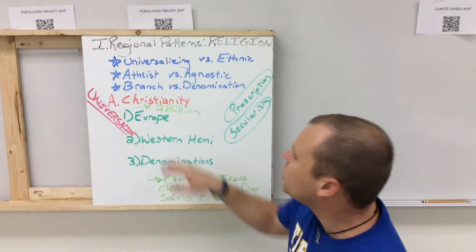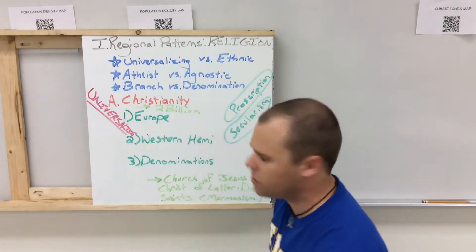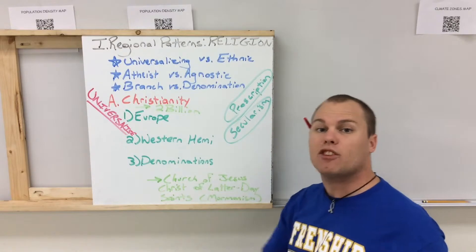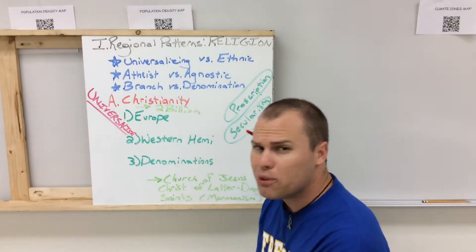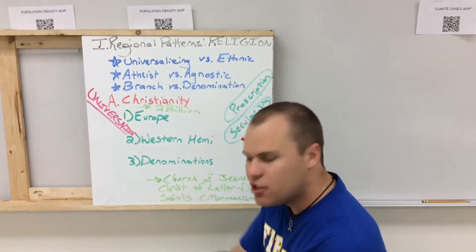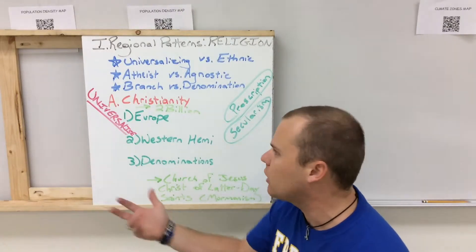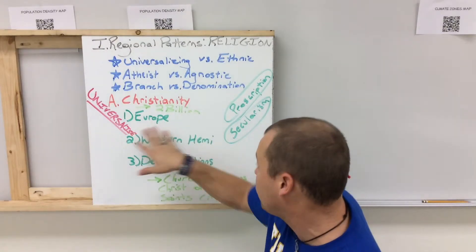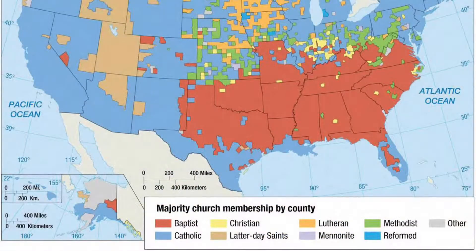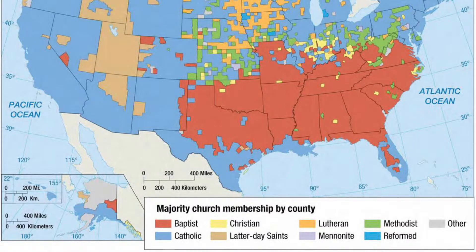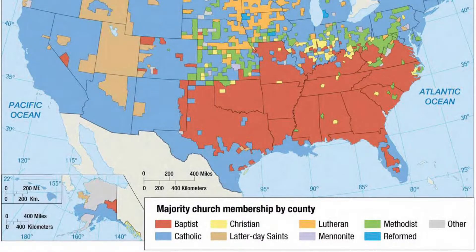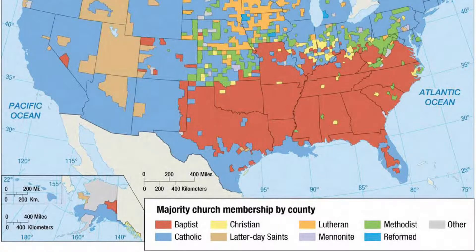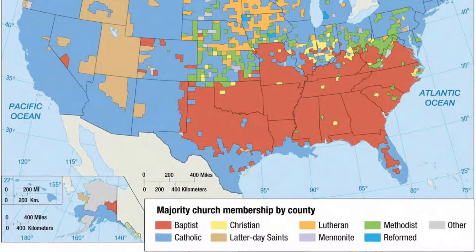The first major religion we're talking about is Christianity. There's more than two billion Christians in the world. These statistics can often be controversial, as places like the United States don't keep stats on how many people are actually Christian. In Europe, you're predominantly going to have Roman Catholic Christianity. The Western hemisphere is 90% Christian, Latin America is 93% Catholic, and in the United States, 40% of Christianity is Roman Catholicism.